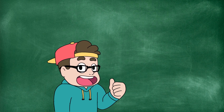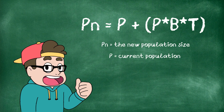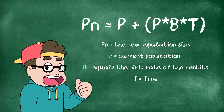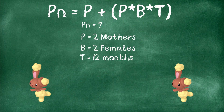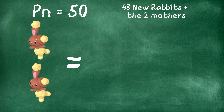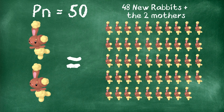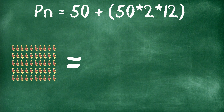Please bear with me, we are about to do some math. Here is one of the many formulas that can be used to calculate population increase, where Pn equals the new population size, P equals the current population, B equals the birth rate, and T equals time. We're only going to be looking at the female rabbit population. Starting with two mother rabbits that give birth to two females each over 12 months, we get Pn = 2 + (2 × 2 × 12), which equals 50 female rabbits. The next year, Pn = 50 + (50 × 2 × 12), which equals 1,250.